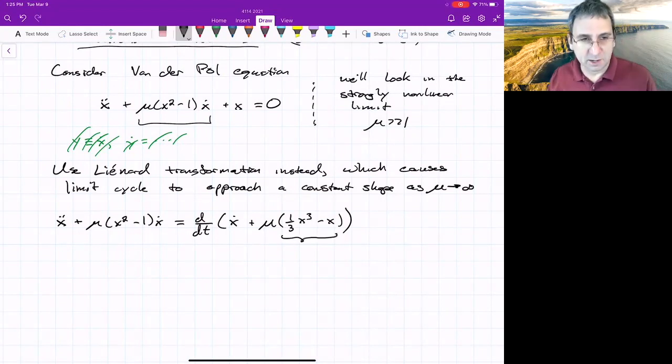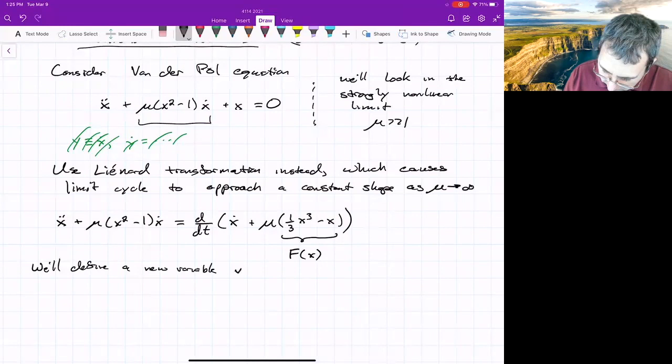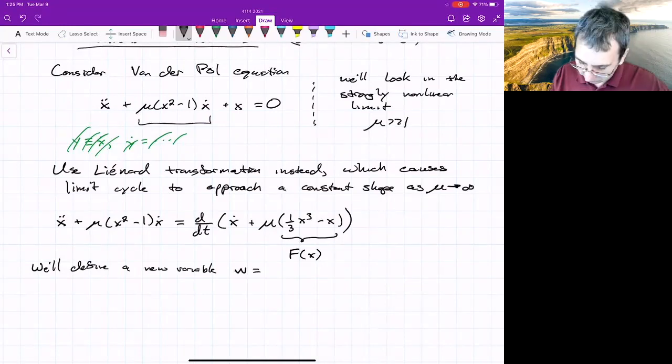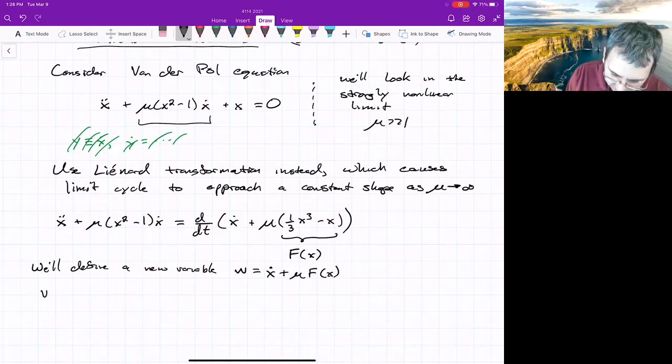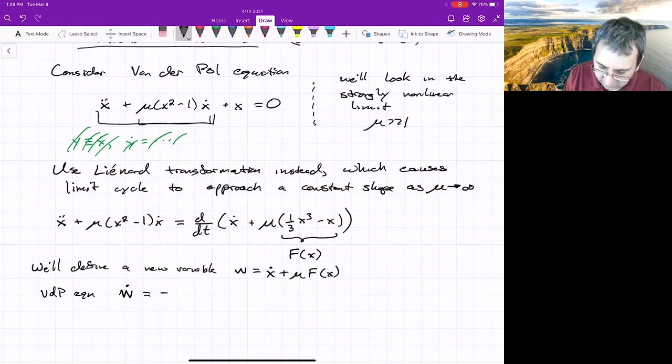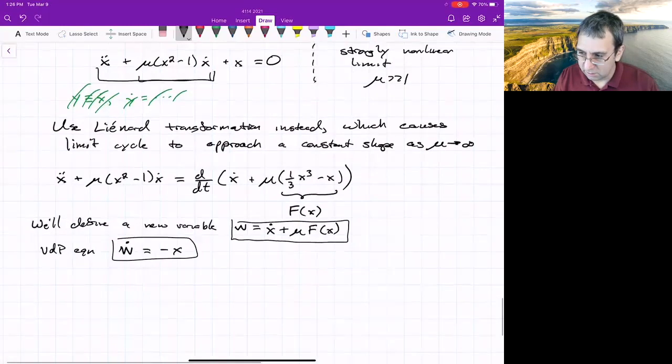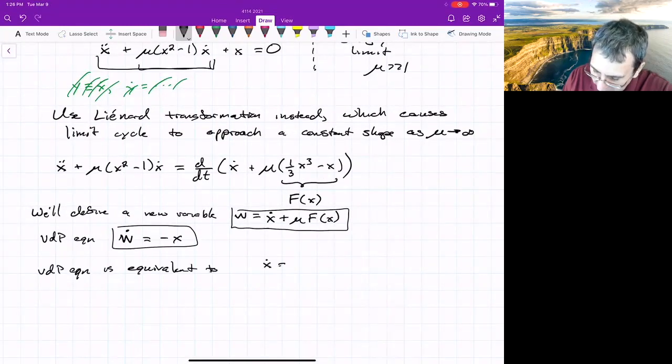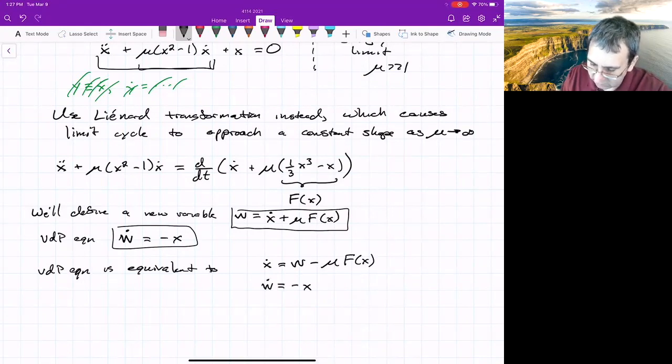It sort of suggests this function means something here. So we'll define this as f, capital F of x. We'll define a new variable w that equals this thing inside the derivative. w equals x dot plus mu f, which is a function of x. So if we do that, then what is the Van der Pol equation? I'll just write it this way, the VDP equation. This is w dot is this part up here. So that means it equals negative x. So this is actually a system of ODEs, first order system of ODEs. The Van der Pol equation is equivalent to x dot equals w minus mu f of x and w dot equals negative x. So that's a weird transformation.